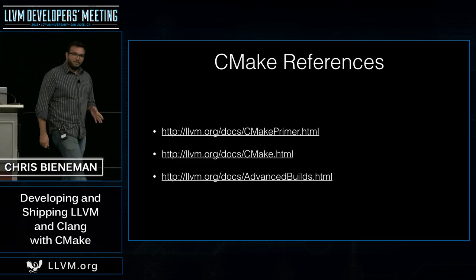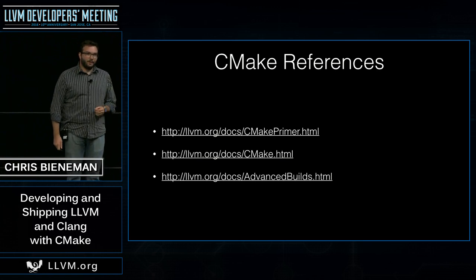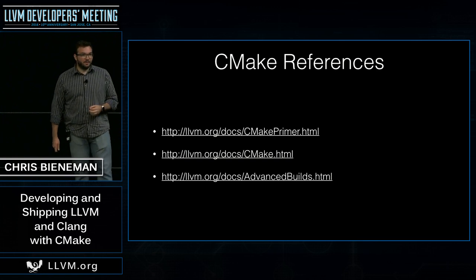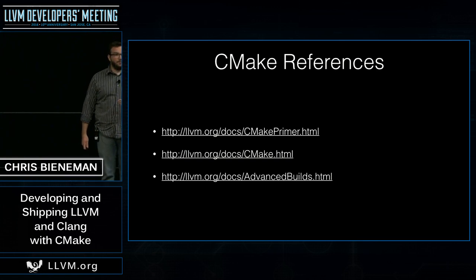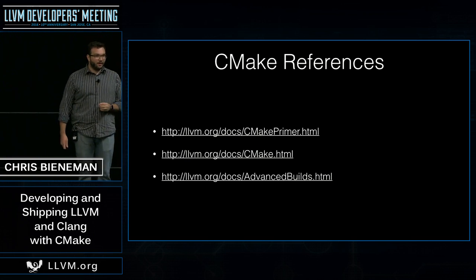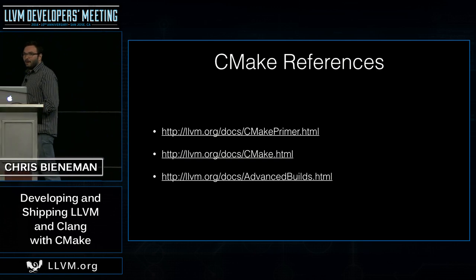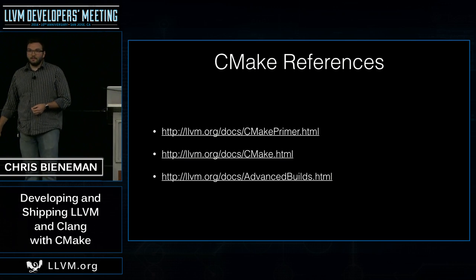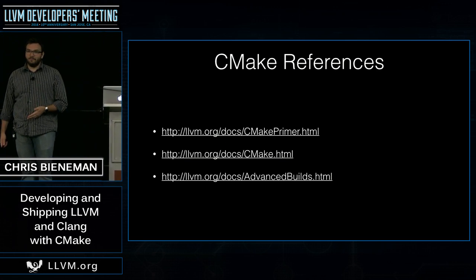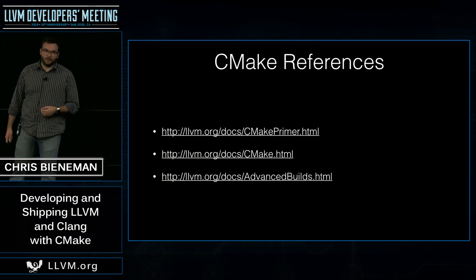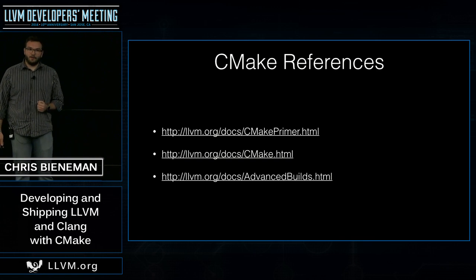This is as deep as I'm going to go into the CMake language for now, but we have great resources on LLVM.org. The first link is a primer that talks about the CMake language, going in depth on aspects that are a little unintuitive, and covers common pitfalls. The next link covers common build settings and configurations people use with the LLVM build system. The last link covers more advanced build configuration options, including some things I'll talk about later.